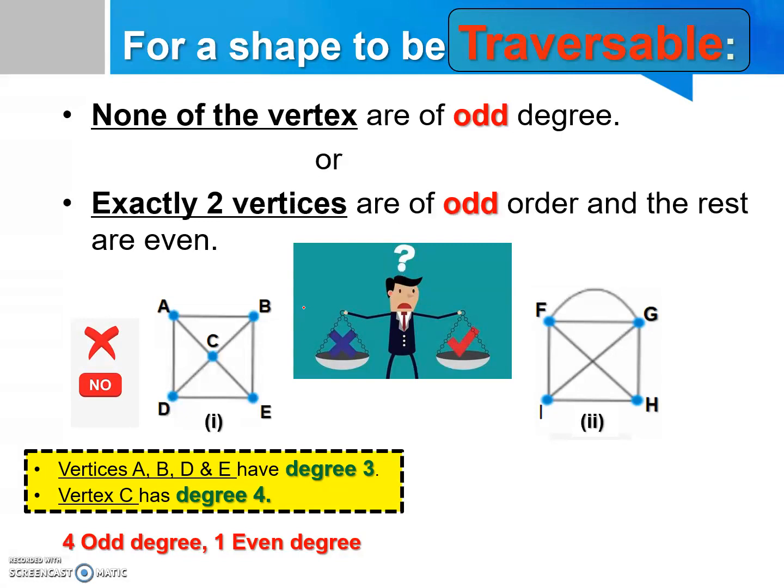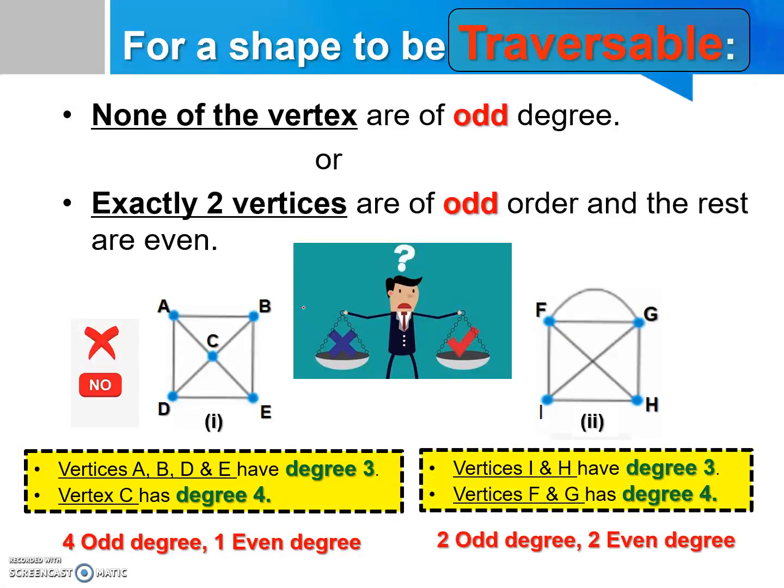However, for the second network, vertices I and H have degree of 3, while vertices F and G have degree of 4. So we can conclude that the graph or the network has 2 odd degrees and 2 even degrees. Since there are 2 odd degrees in the network, hence it is a traversable network.